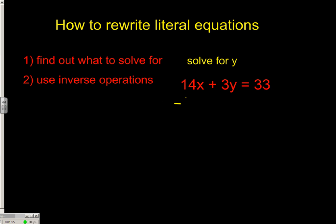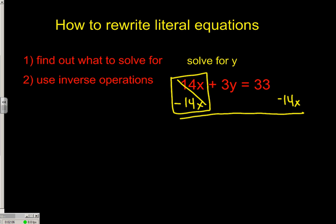Here we get into a little bit more of a complex situation. Let's just take it one step at a time. We'll get the 14x out of the way because we can just subtract it. And we're left with positive 3y — or 3 times y — equals 33 minus 14x. How can I get that positive 3 to go away? It's bound together with multiplication, so we'll undo it with an inverse operation. 3 divided by 3 is positive 1.